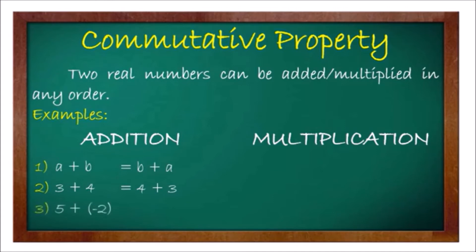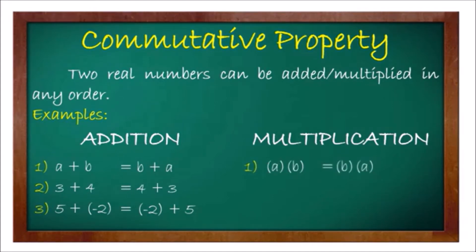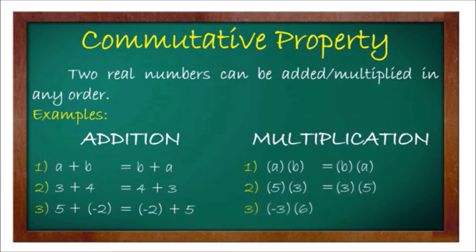For multiplication under the commutative property: a times b equals b times a. For example, 5 times 3 equals 15, which is the same as 3 times 5, also 15. Another example: negative 3 times 6 equals negative 18, which is the same as 6 times negative 3, also negative 18.